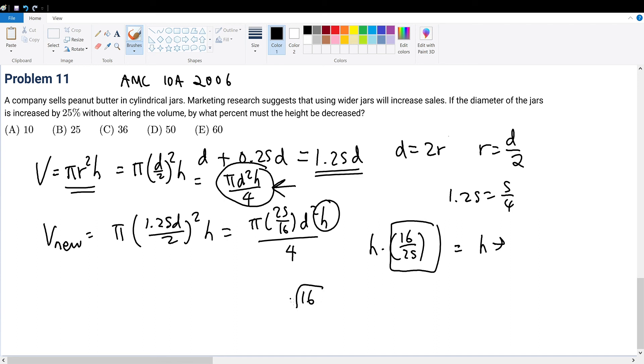How do we relate that? 16 divided by 25 gives us the percentage. Doing the division: 16/25 equals 0.64. So we must decrease it by 0.64 or 64%.